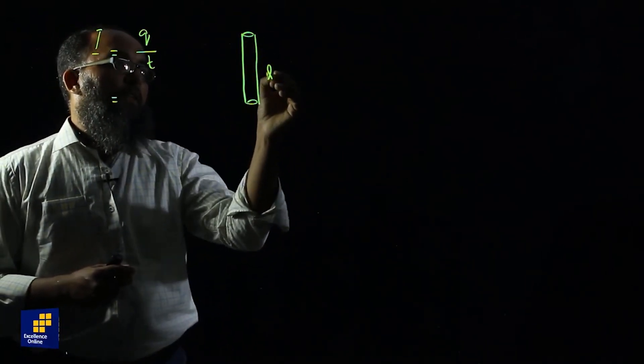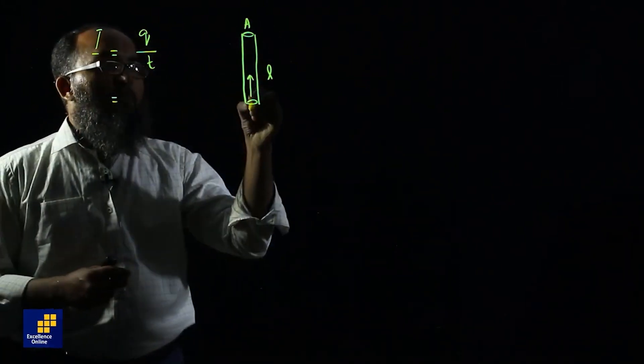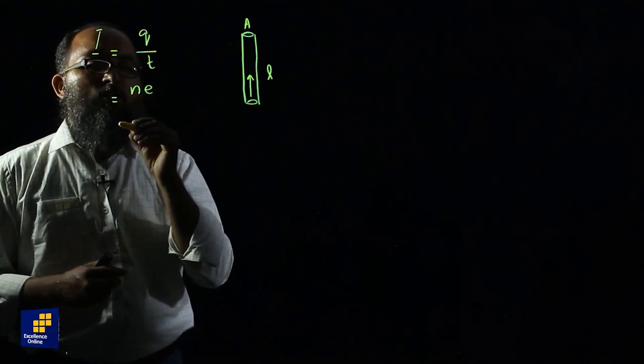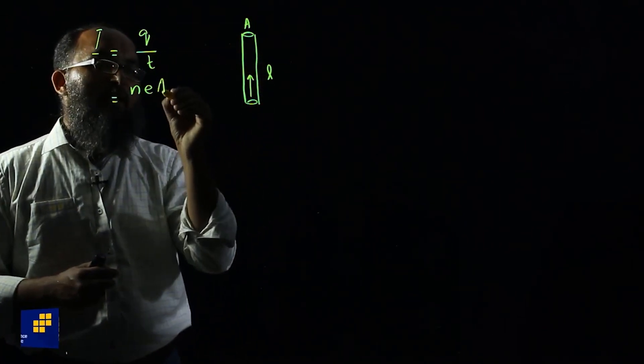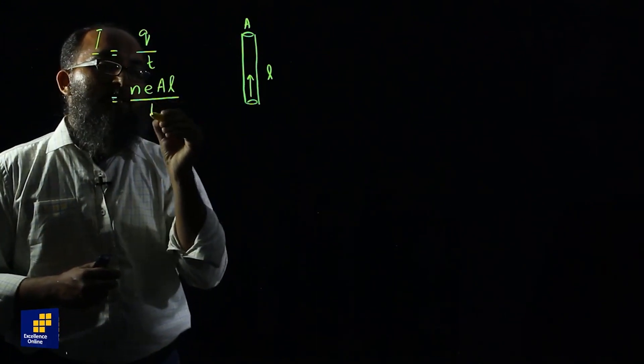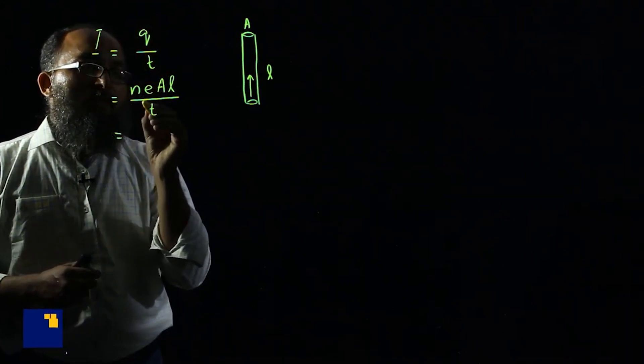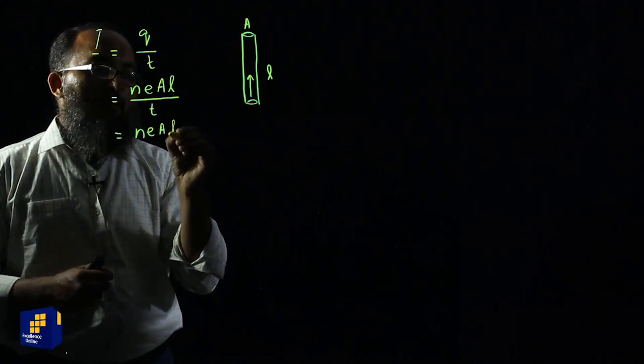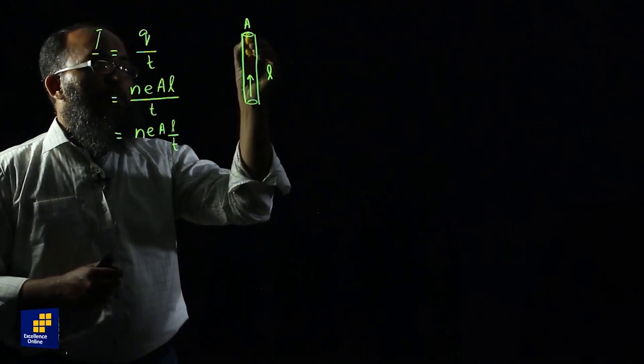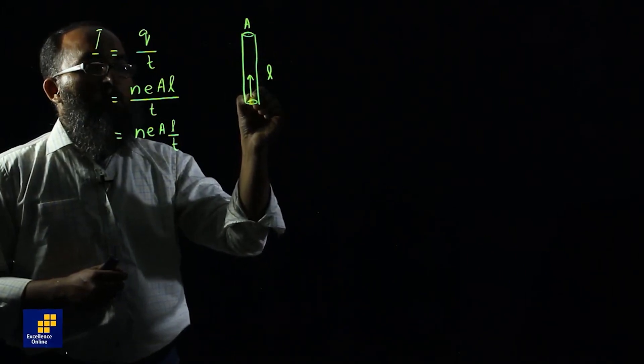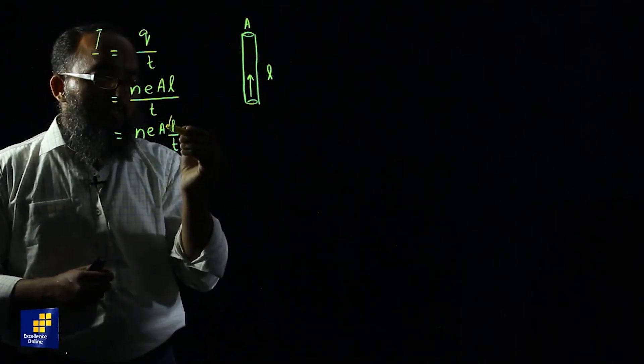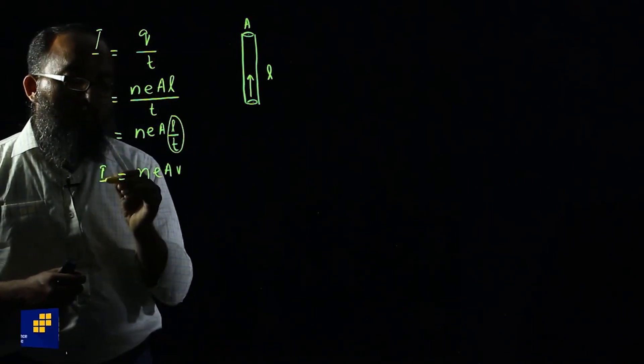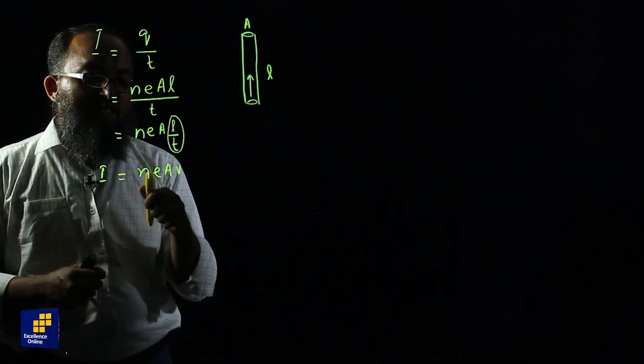If we consider unit length of the conductor, suppose that we have a wire, the length of the wire is L and the cross sectional area is A. The number of charges flowing through this volume of the wire is given by N number of electrons, E charge of each electron, into volume of the conductor. The volume of the conductor will be area into length of the conductor, divided by time. N is the number of electrons, E is the charge of each electron, A is the area of cross section, L upon T. This L upon T gives us the average drift velocity of the charge particles. So the current flowing through the wire is N E A V.